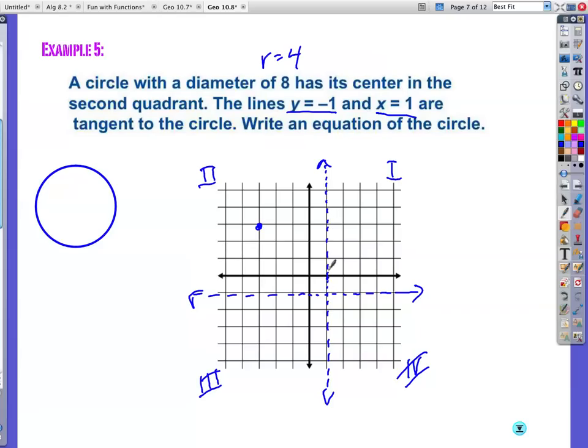If I go over 4 units, down 4 units, right? That means that this and this, and then I would go out 4 units this way. I would go up 4 units here. Okay? Now, that's a bad sketch, but you get the idea.